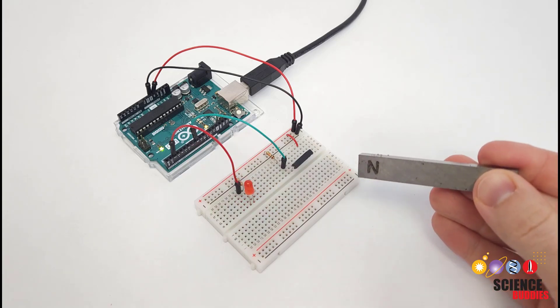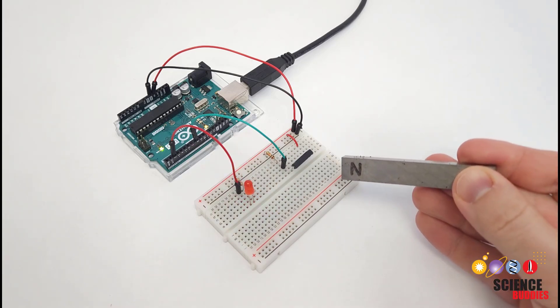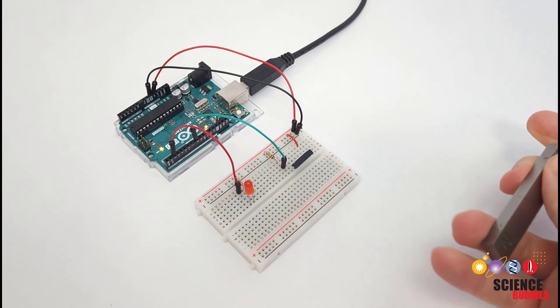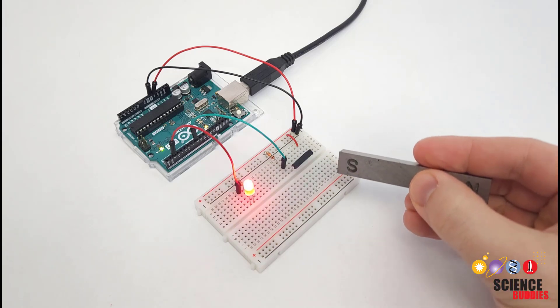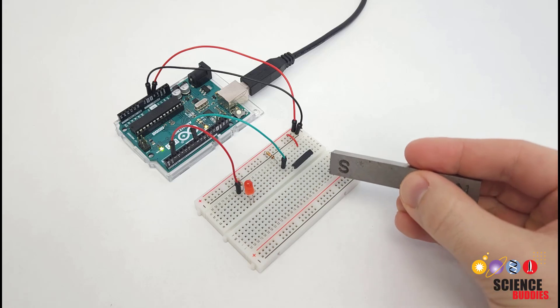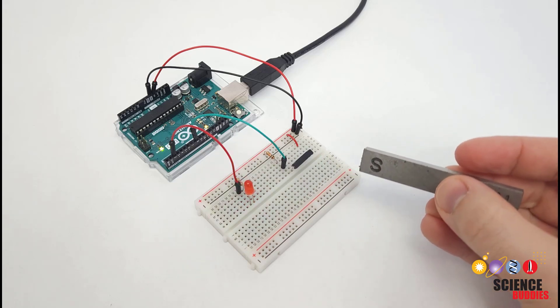In this video, I will show you how to use a reed switch with an Arduino. A reed switch is an electronic sensor that acts like a button or a switch, but is activated by the presence of a nearby magnetic field instead of pressing on it.